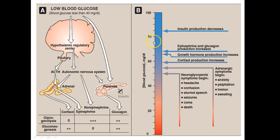This is a blood glucose concentration scale showing the events that happen at various levels. At around 70 mg/dL, insulin production decreases. Epinephrine and glucagon production increases, and growth hormone and cortisol production increase when it is less than 60 mg/dL. Adrenergic symptoms like anxiety, palpitation, tremor, and sweating appear below 50 mg/dL. Below 50, neuroglycopenic symptoms begin — headache, confusion, seizures, coma, and death. Neuroglycopenia is the term used when the brain is deprived of its essential fuel, glucose.